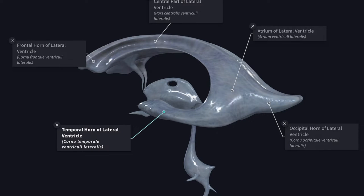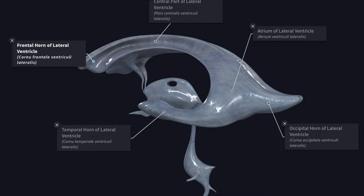For descriptive purposes, each lateral ventricle is divided into four parts. The central part or body lies mostly within the parietal lobe and extends from the interventricular foramen in front to the splenium of the corpus callosum behind. The anterior horn or frontal horn is an anterior extension from the central part into the frontal lobe, lying in front of the interventricular foramen and behind the posterior surface of the genu of the corpus callosum.